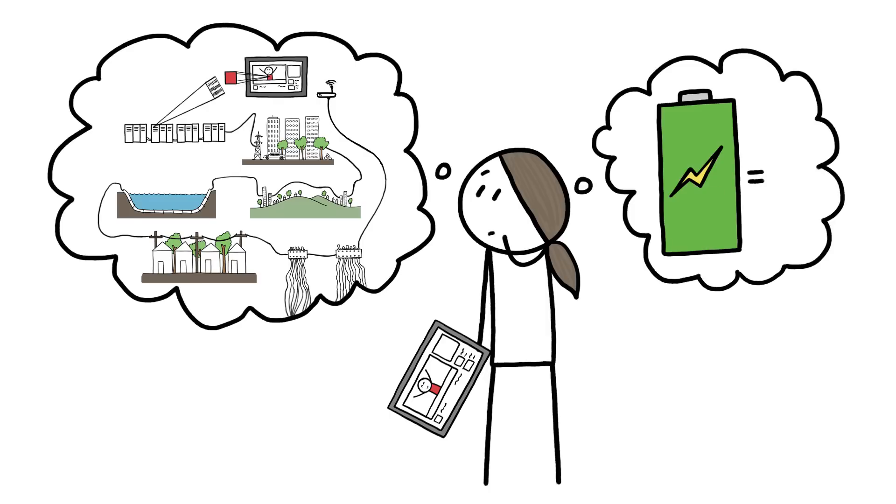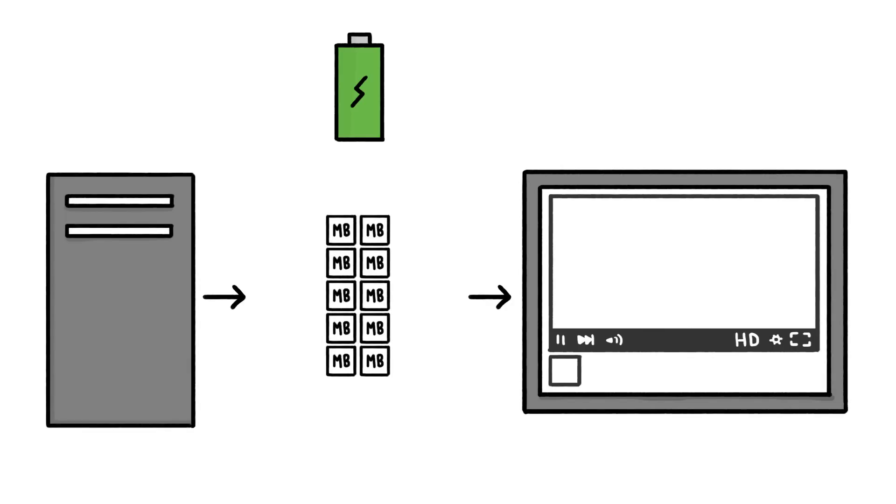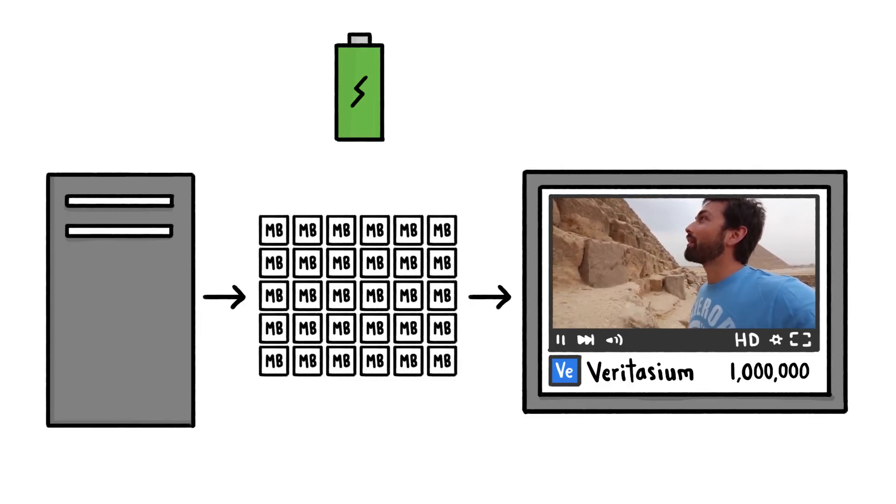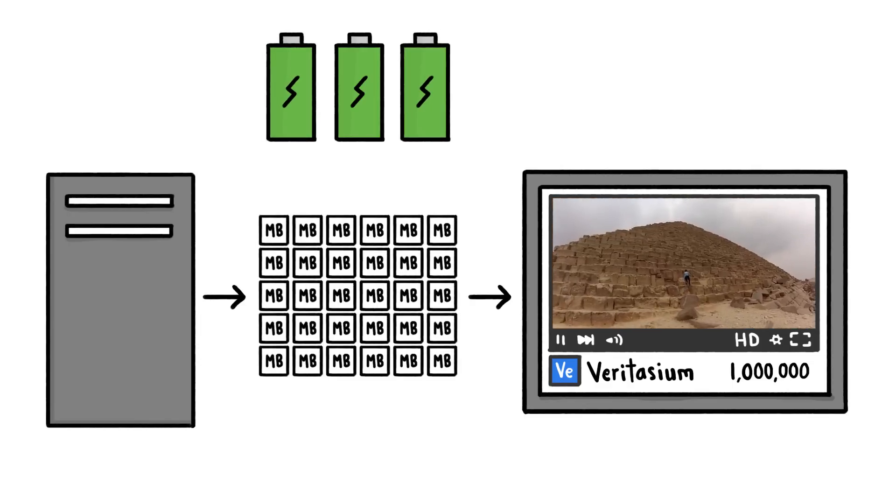Estimates for the total energy used on this journey are hard to make, but various analyses suggest that a AA battery's worth of energy will get you around 10 megabytes of data. A three-minute live-action video is around 30 megabytes, so it drains three AA's to stream or download.